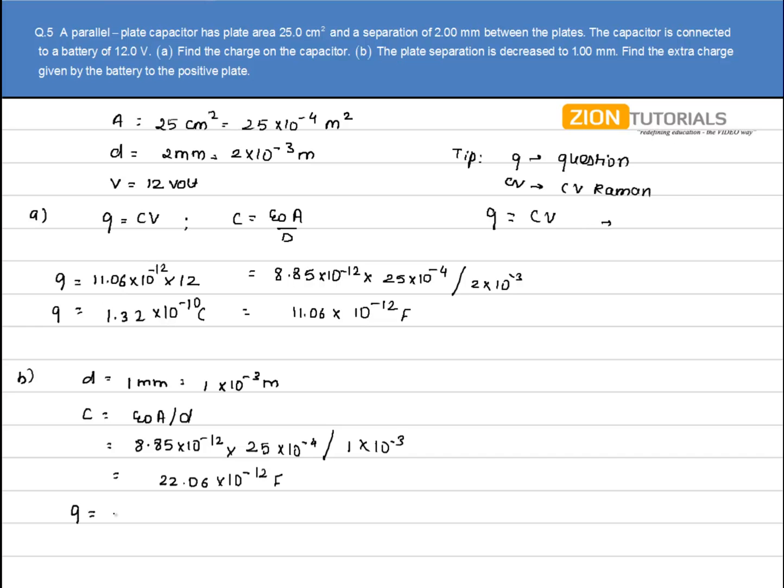Calculating the charge using Q = CV: Q = 22.06×10⁻¹² × 12V = 2.64×10⁻¹⁰ coulombs.